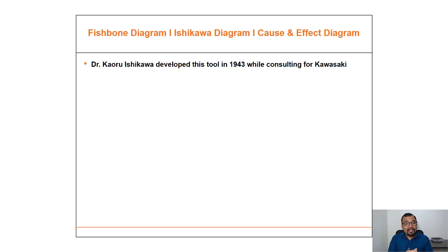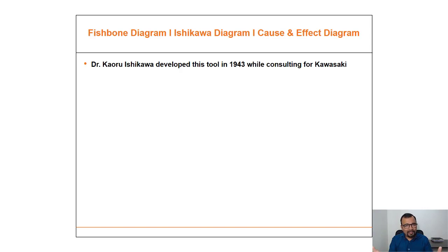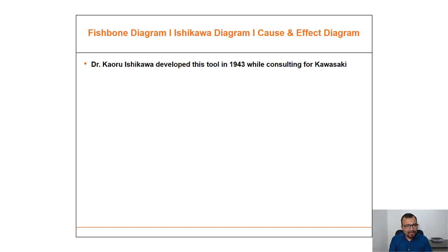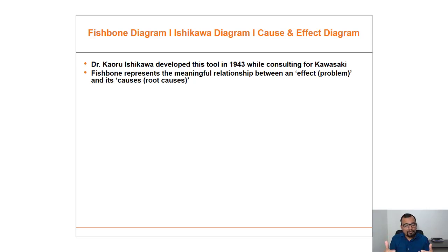This fishbone diagram, or the Ishikawa diagram, was invented by Dr. Kauru Ishikawa in 1943 while he was consulting to Kawasaki. If you look at tools like the 5-Why or many others, you will find their invention coming from Japan. The fishbone represents the meaningful relationship between an effect — that is, the problem you want to solve — and its causes or root causes.